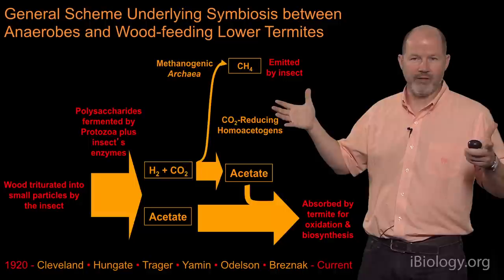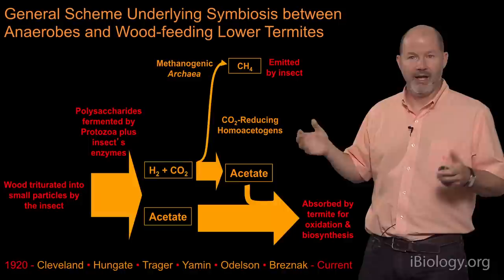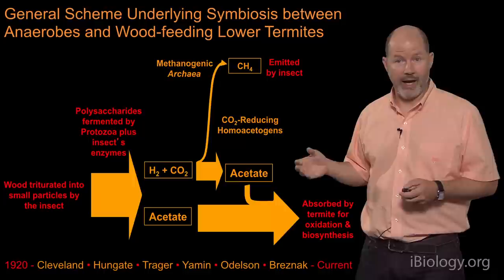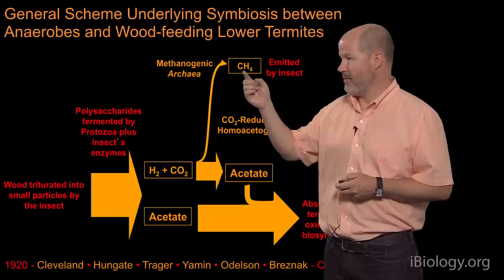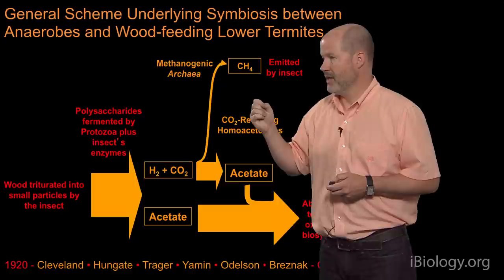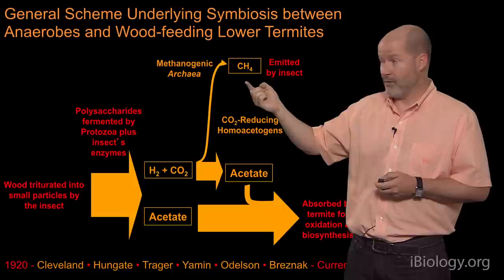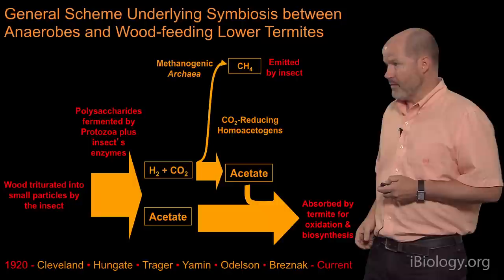Those protozoa also produce hydrogen gas. Think of the classic 1930s picture of the Hindenburg blimp over New Jersey — it was filled with hydrogen. There is a lot of energy in hydrogen; it's an energy source that can be used by different microorganisms. In the termite, and in many non-marine, oxygen-devoid environments, hydrogen and CO2 is converted into methane by a group of organisms called methanogenic archaea, and this methane is emitted by the insect — it is sort of lost calories, a potential energy source lost from the system.